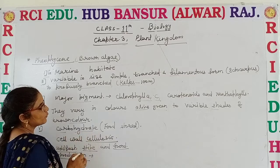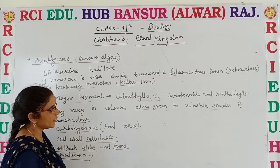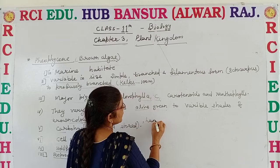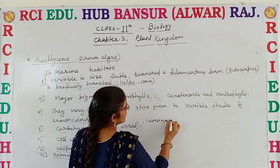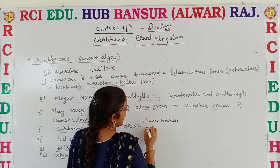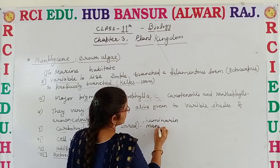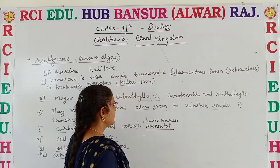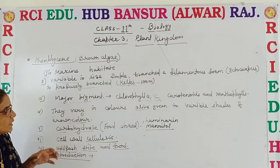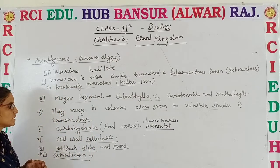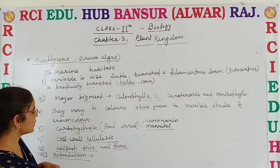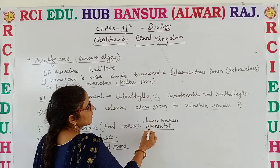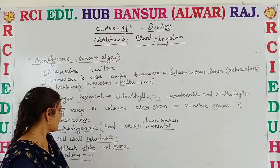Food is stored in the form of carbohydrate, mainly in the form of Laminarin and Mannitol. So the food stored in the members of the Phaeophyceae is in the form of carbohydrate, especially Laminarin and Mannitol.